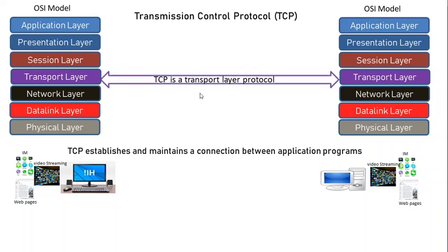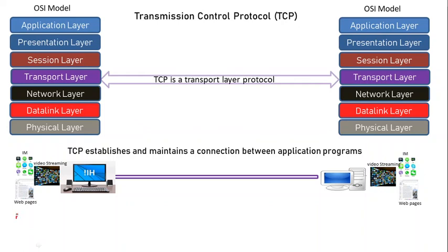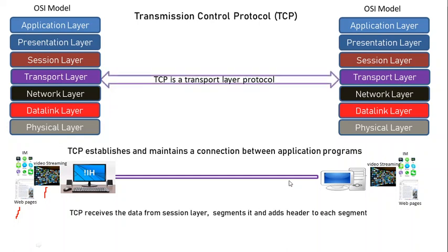In that case, the transport layer TCP — Transmission Control Protocol — establishes and maintains a connection between application programs. For instance, when we are using many application programs like instant messaging, multiple web pages, or video streaming, the job of TCP is to establish a connection between those application programs.